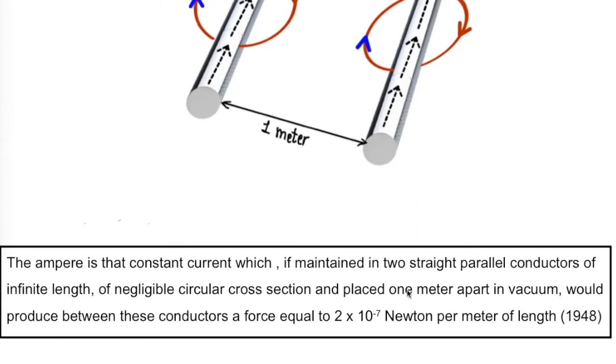It is technically defined as: the ampere is that constant current which, if maintained in two straight parallel conductors of infinite length, of negligible circular cross section, and placed one meter apart in vacuum, would produce between these conductors a force equal to 2 × 10^-7 Newton per meter of length. And this definition was given in the year 1948.